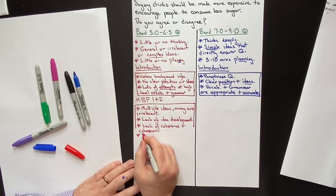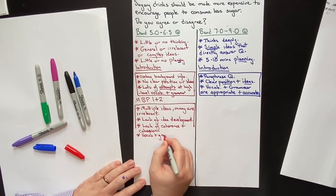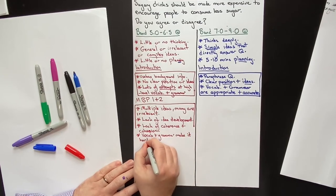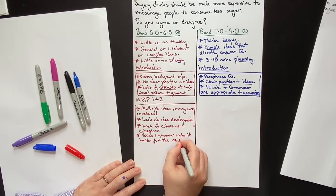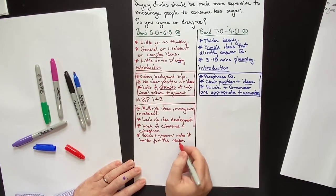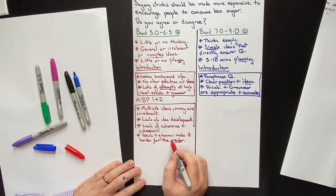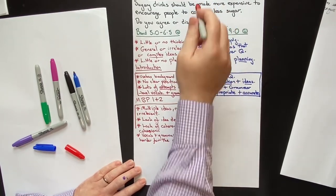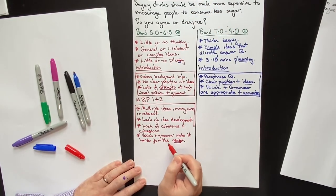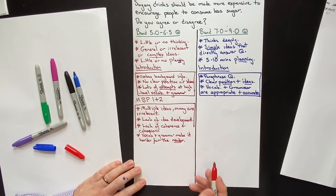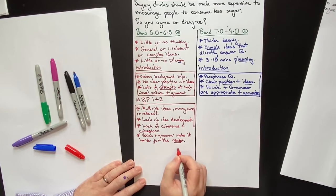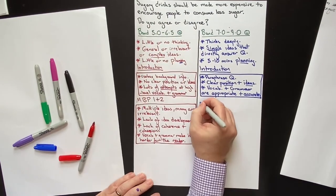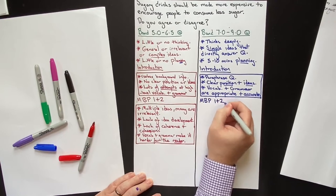When it comes to vocabulary and grammar, the low-scoring student's vocab and grammar makes it harder for the reader. We write an essay to communicate with the reader — if your vocabulary and grammar makes it harder for the reader to understand the answer to the question, then it's not very good. It doesn't matter if it is high-level or complex. Does it help the reader? If it doesn't help the reader, you're going to get one of those lower scores.